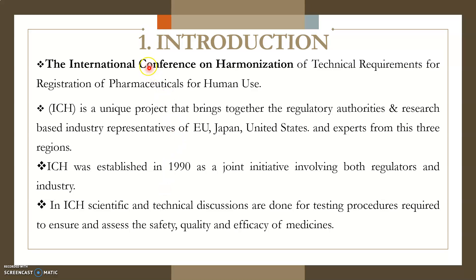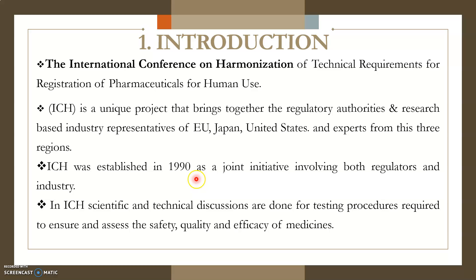Point number one: Introduction. The term ICH, that is the International Conference on Harmonization, is a technical requirement for the registration of pharmaceuticals which have been utilized for human use. ICH is a unique project that brings together the regulatory authorities as well as research-based representatives of the European Union, Japan, and United States. ICH was established in the year 1990 as a joint initiative involving both regulators as well as industrial personnel.